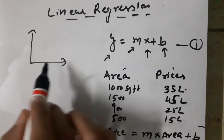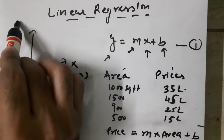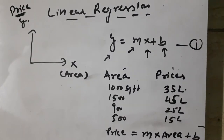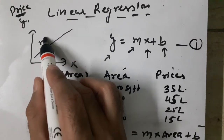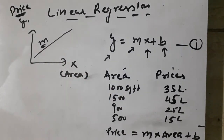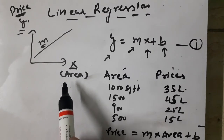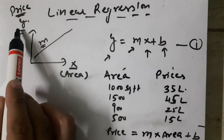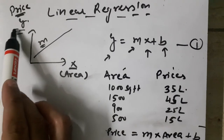Here, x is my area and y is my price. We draw some line, and m is my slope. To refresh: slope is the rate of change of y with respect to the rate of change of x — meaning how a change in x impacts the value of y, or in other words, how y changes depends on x.